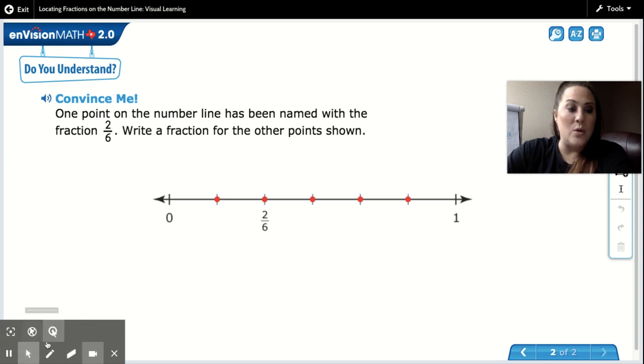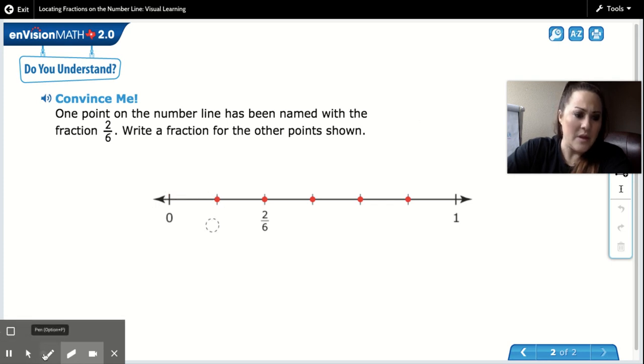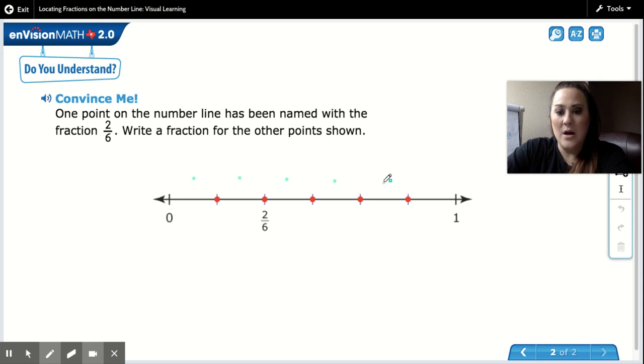Well, you know that your first step is to see how many equal spaces this number line was divided into. So we have one, whoops, I'm not going to do it that way because that's how we count. And let me get a different color. I'm going to go one, two, three, four, five, six. So you know that the denominator for all of these fractions is six.